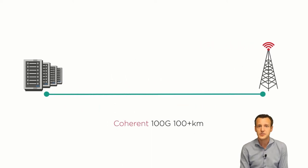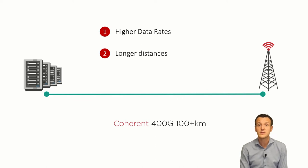In coherent transmission, instead of just using the amplitude to encode information, we also use other properties of the light such as phase and polarization. This allows us to increase the data rate while still being able to transmit over long distances. For operators this means they can upgrade their networks without replacing the physical fiber infrastructure in the ground.